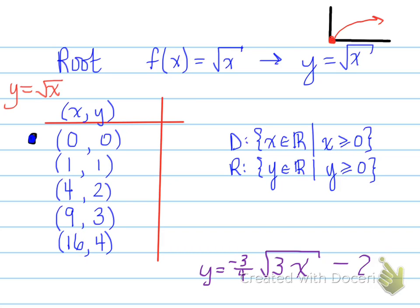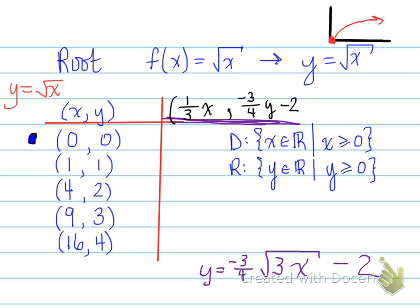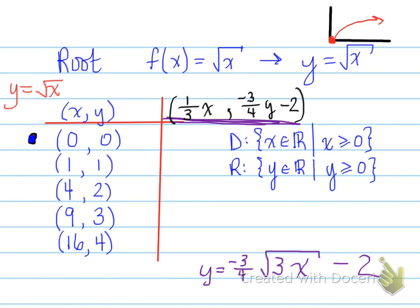Here's an example of a question for the root function. Negative 3 quarters y minus 2, and on the x it's going to be 1 third x as our x values. We do this and plug it in: 1 third x comma negative 3 quarters y minus 2.